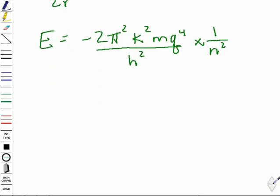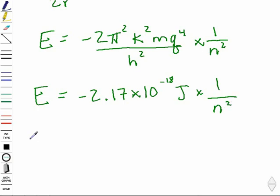In our energy expression, everything in this fraction is actually a numerical constant. So we can simplify all of this and either represent it in terms of joules or electron volts. If it's represented in joules, you get the expression negative 2.17 times 10 to the minus 18 joules times 1 over n squared. Or if we represent it in terms of electron volts, you get a negative 13.6 electron volts times 1 over n squared.